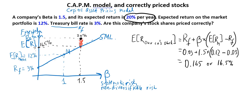As the price grows, the return falls. And eventually the price will be high enough — just right. In other words, these company stock shares are not priced correctly: they are underpriced. The shares are too cheap.